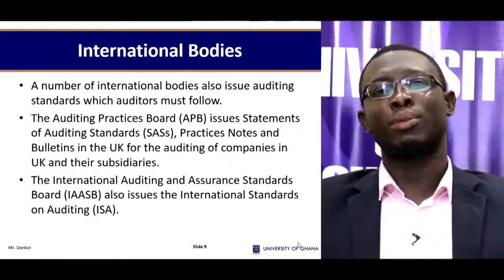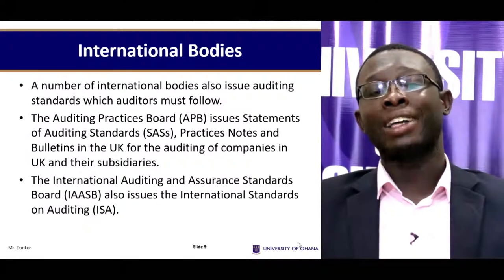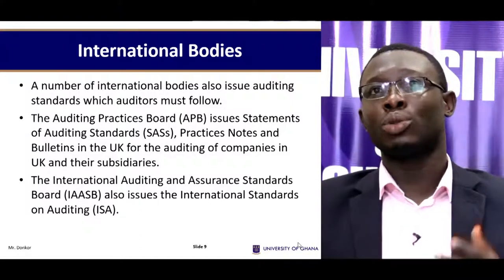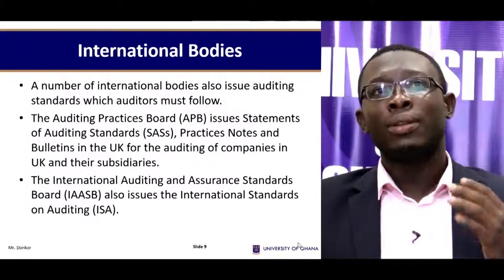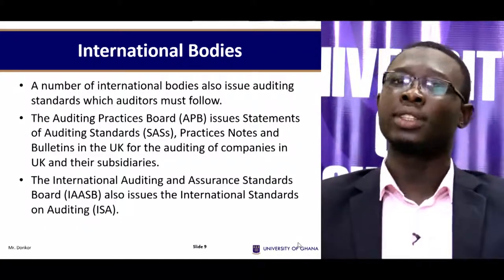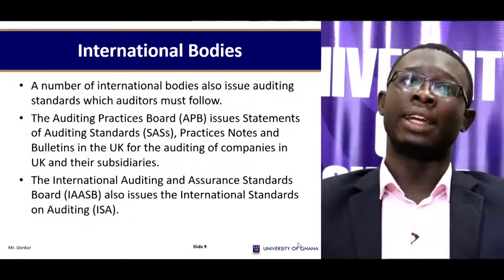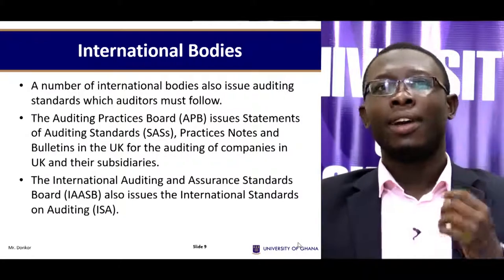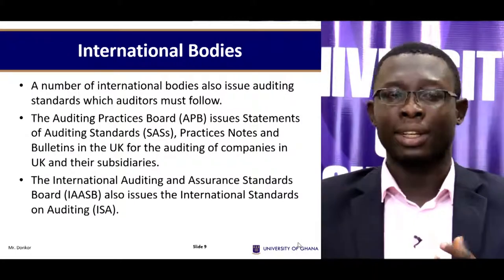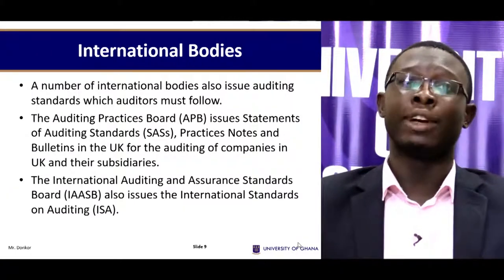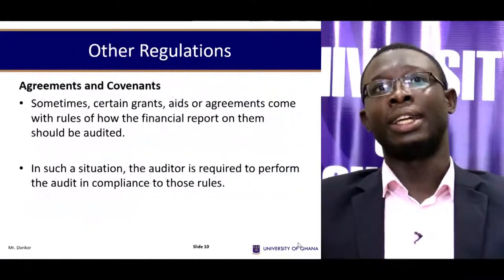International bodies. There are other international bodies that have come up with frameworks and rules to guide the work of auditors. A number of international bodies also issue auditing standards which must be followed. For example, the Auditing Practice Board issues statements of auditing standards, practice notes and bulletins in the UK for auditing of companies in the UK and their subsidiaries. The International Auditing and Assurance Standards Board also issues International Standards on Auditing, which Ghana applies as a member.